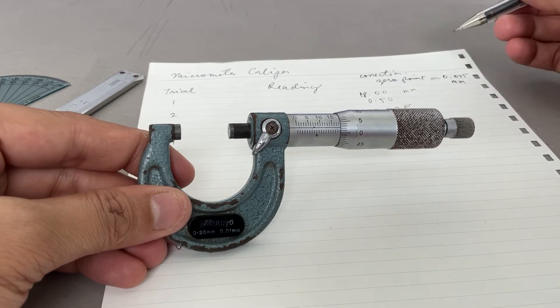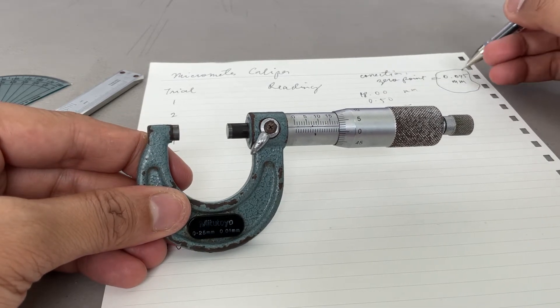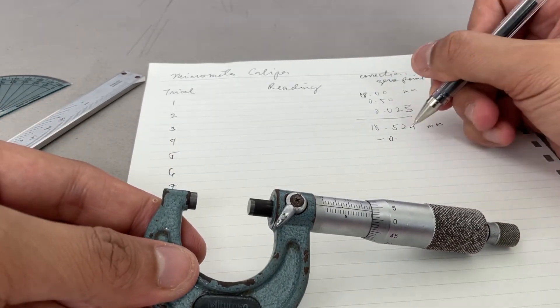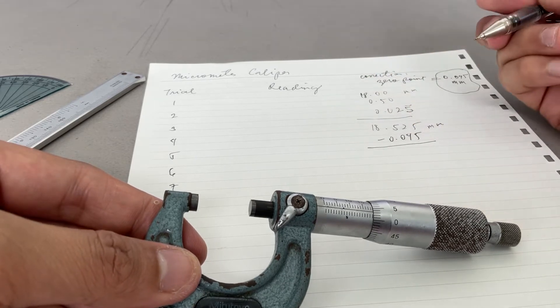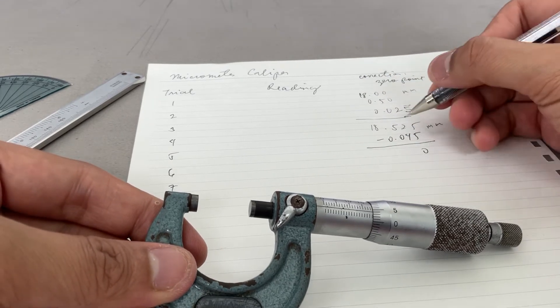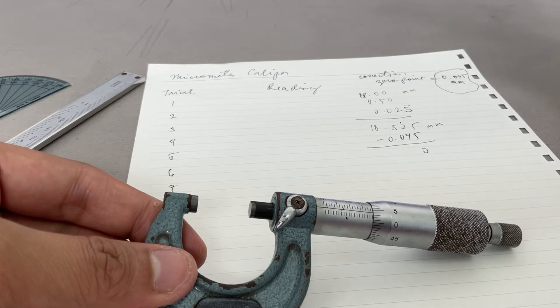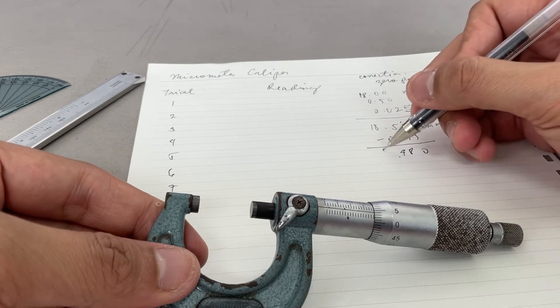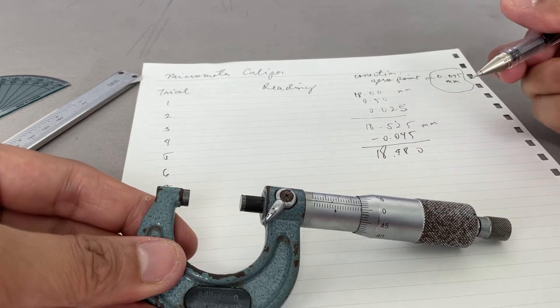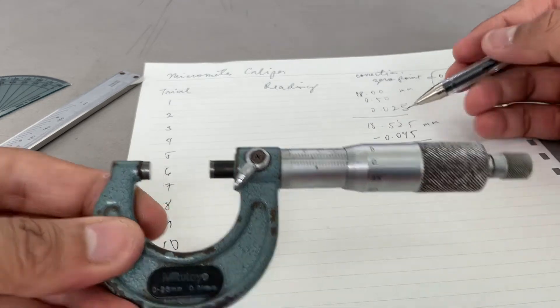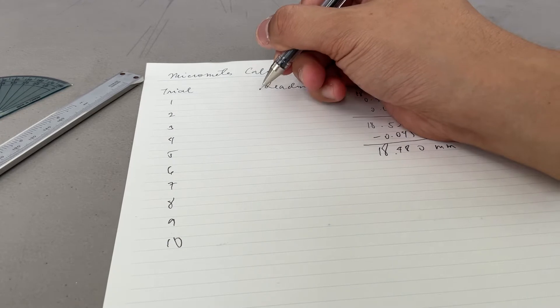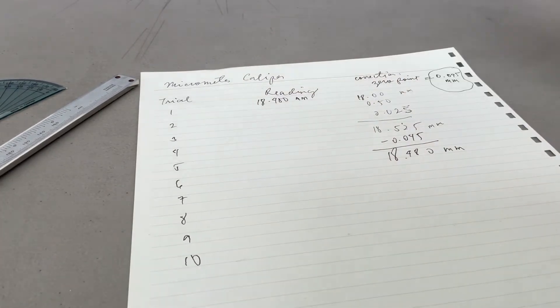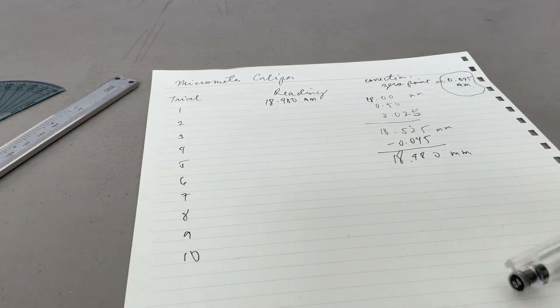But take note you have a zero correction, so you have to deduct it - minus 0.045. That's the reading. So trial one: 18.480 millimeter. We can do another trial, trial number two. I'm going to unlock it and move it again.